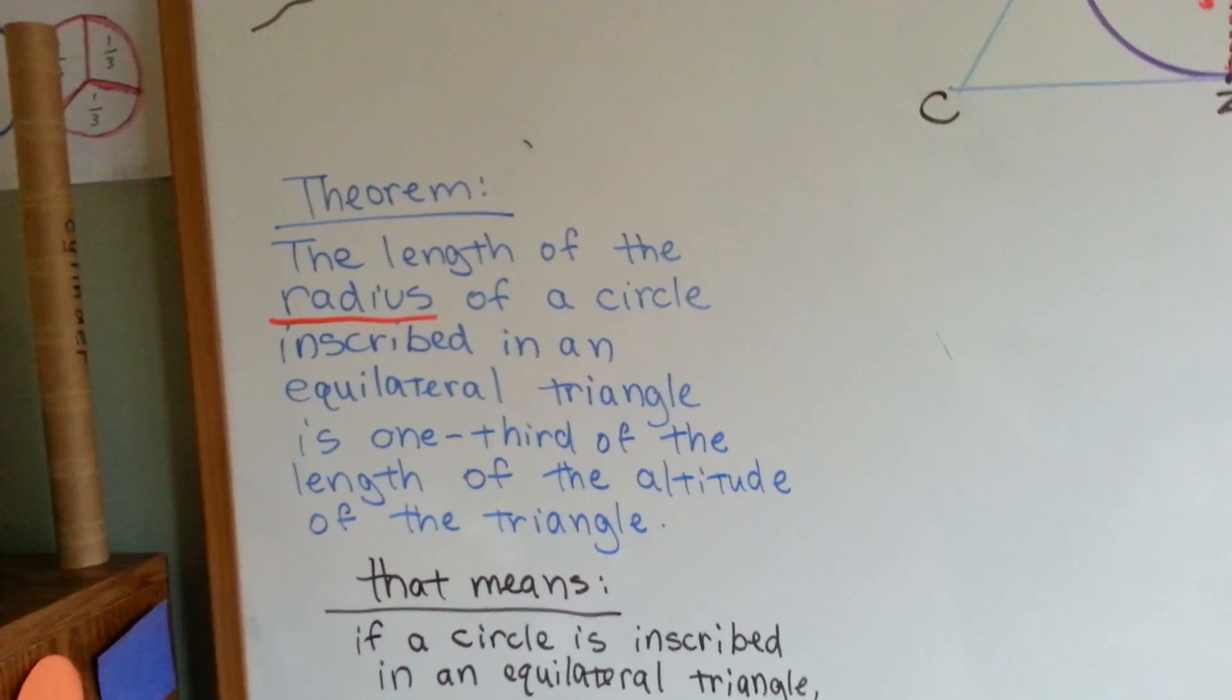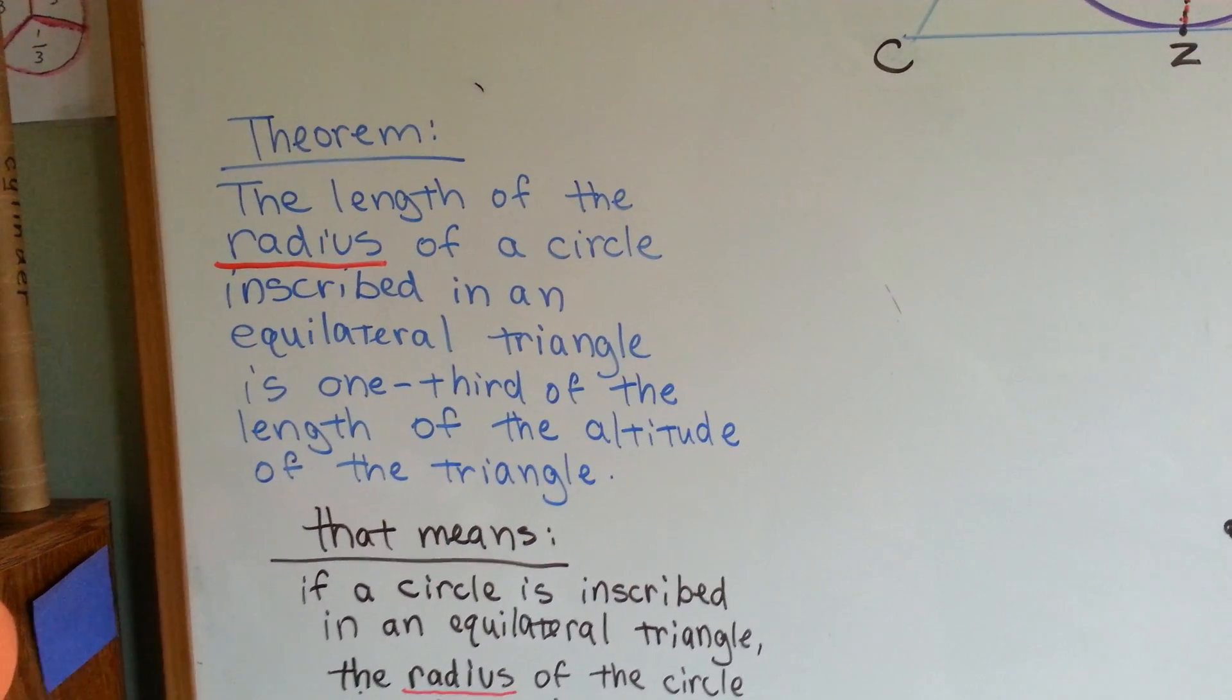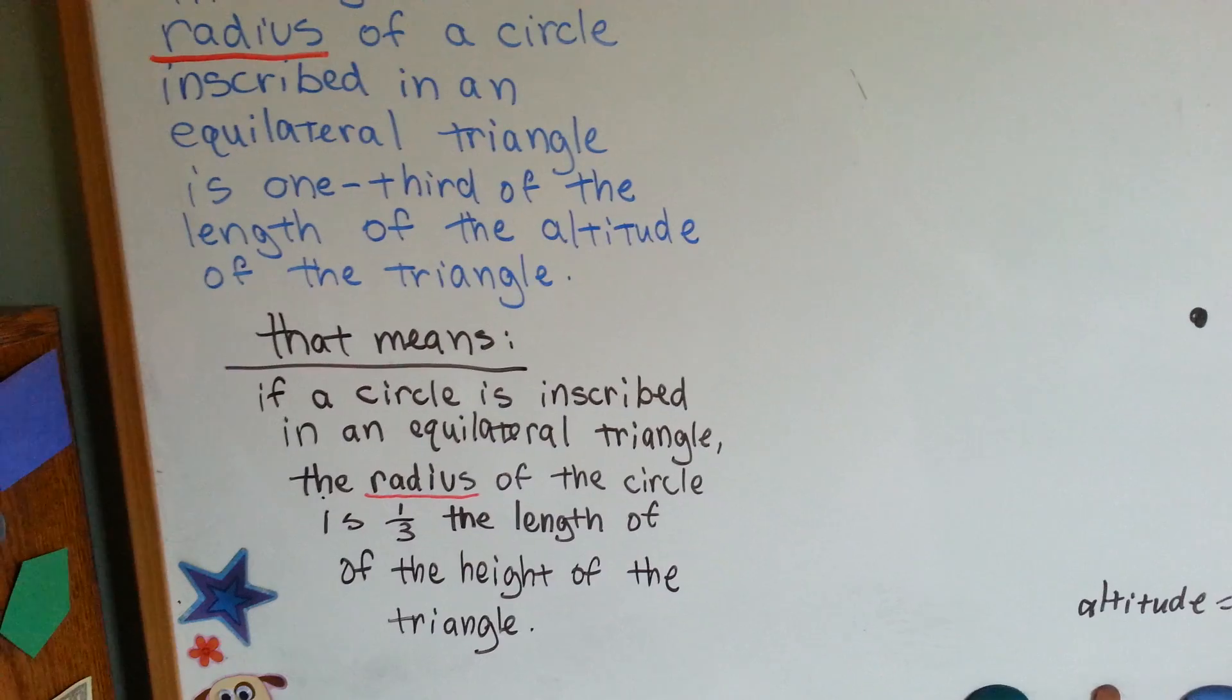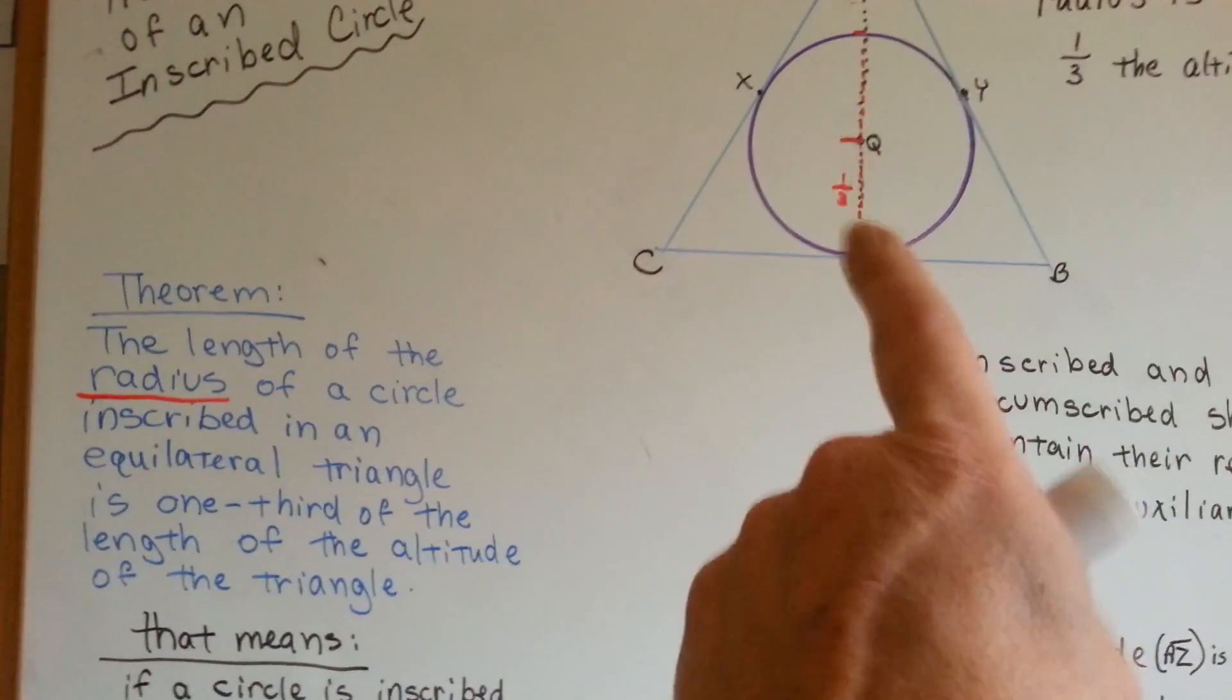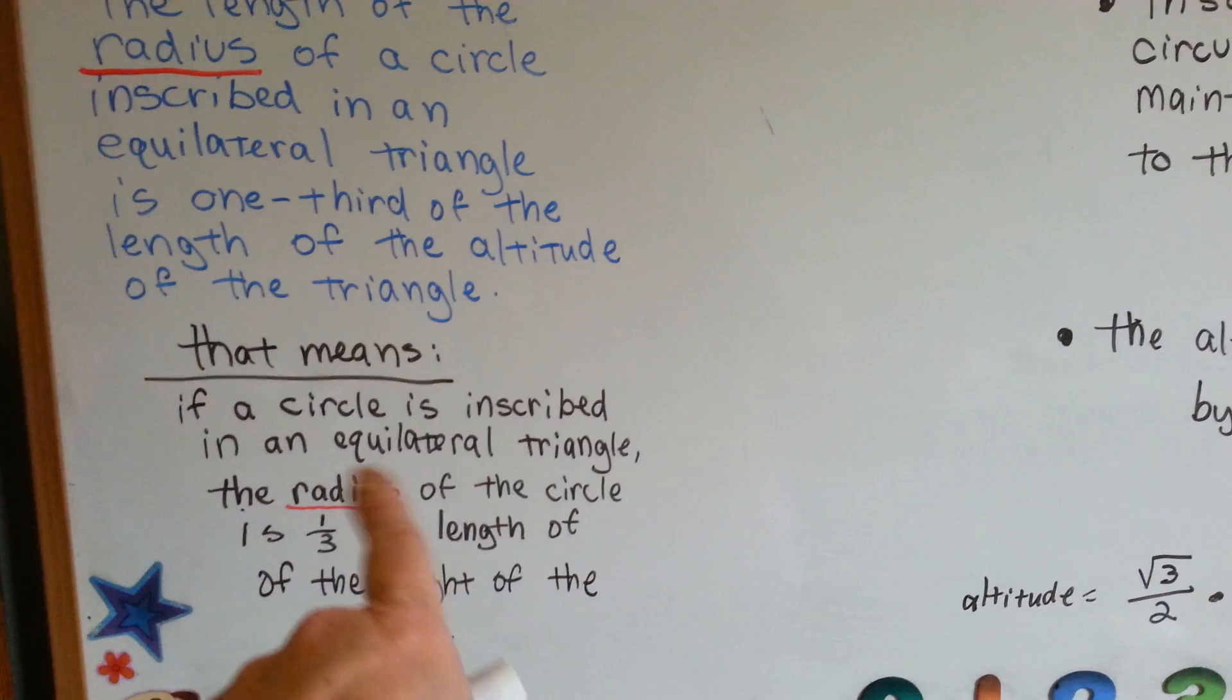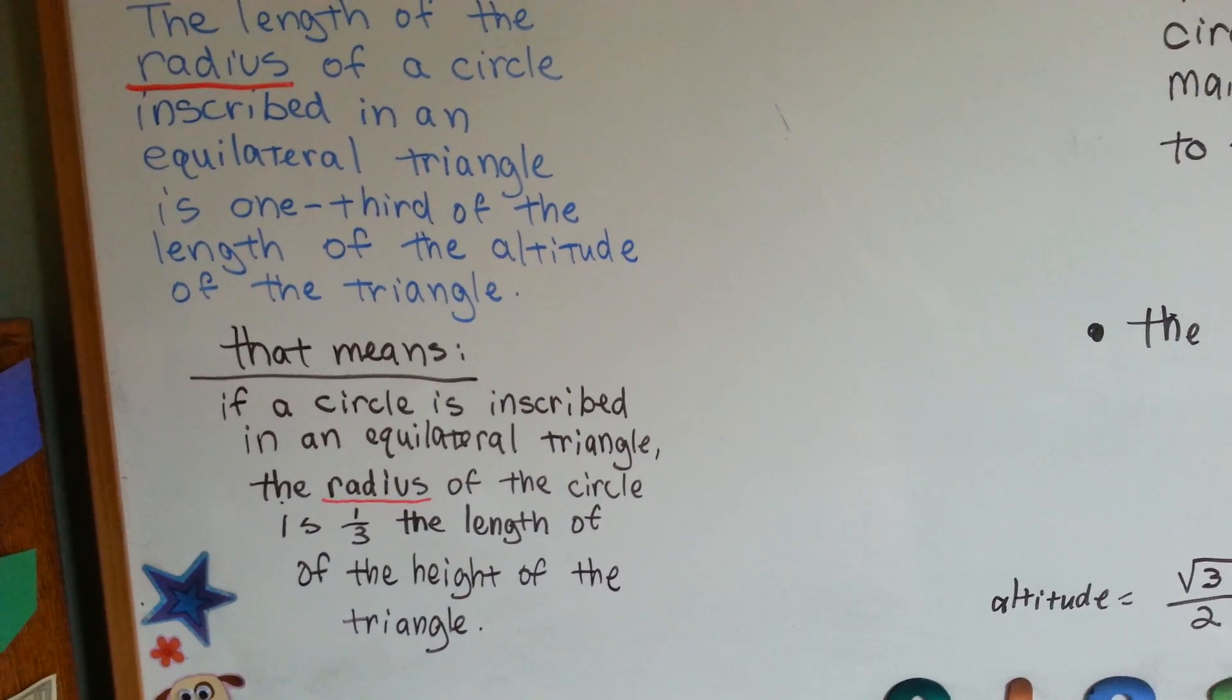The theorem says the length of the radius of a circle inscribed in an equilateral triangle is one-third of the length of the altitude of the triangle. That means if a circle is inscribed inside of an equilateral triangle, the radius of that circle is one-third the length of the height of the triangle.